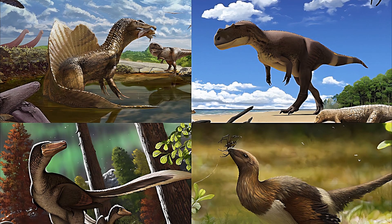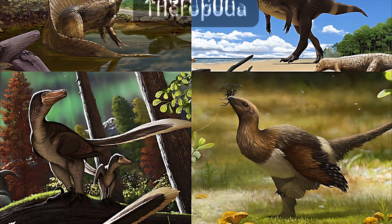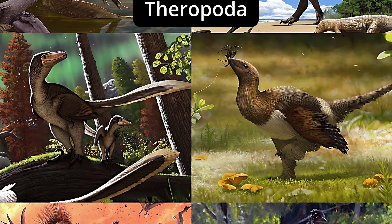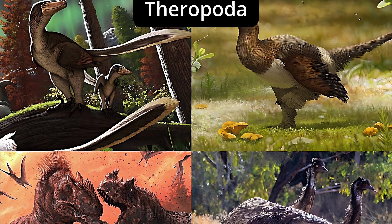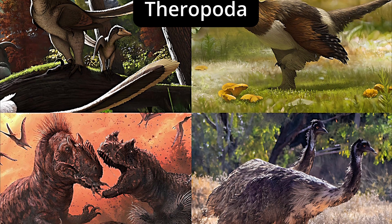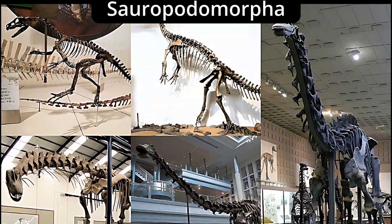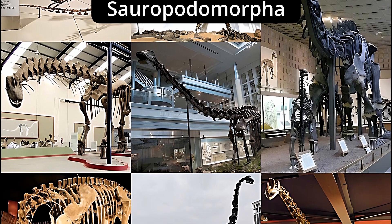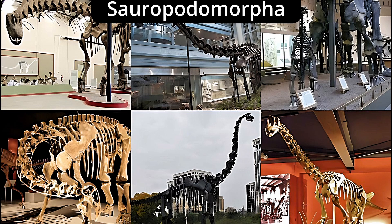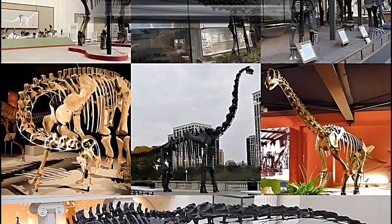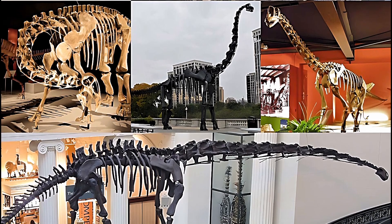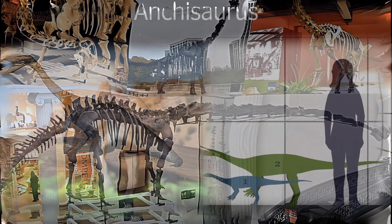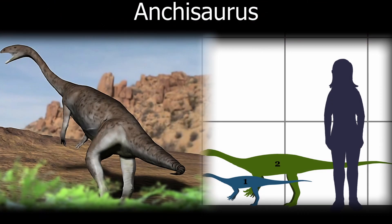Now let's consider the other dinosaur lineage, the Ceriscians, or lizard-hipped dinosaurs. Ceriscians are divided into two primary groups: Theropoda and Sauropodomorpha. Both of these lineages had already picked up in the late Triassic. The Sauropodomorphs include sauropods and their ancestral relatives. They'd started off fairly small but had grown a lot already in the Triassic and become the dominant herbivores. In the Jurassic, they continued to grow, so that sheer size offered protection against predators and their long necks facilitated access to high vegetation. An early Jurassic basal sauropodomorph example arrives in the form of Inchysaurus.